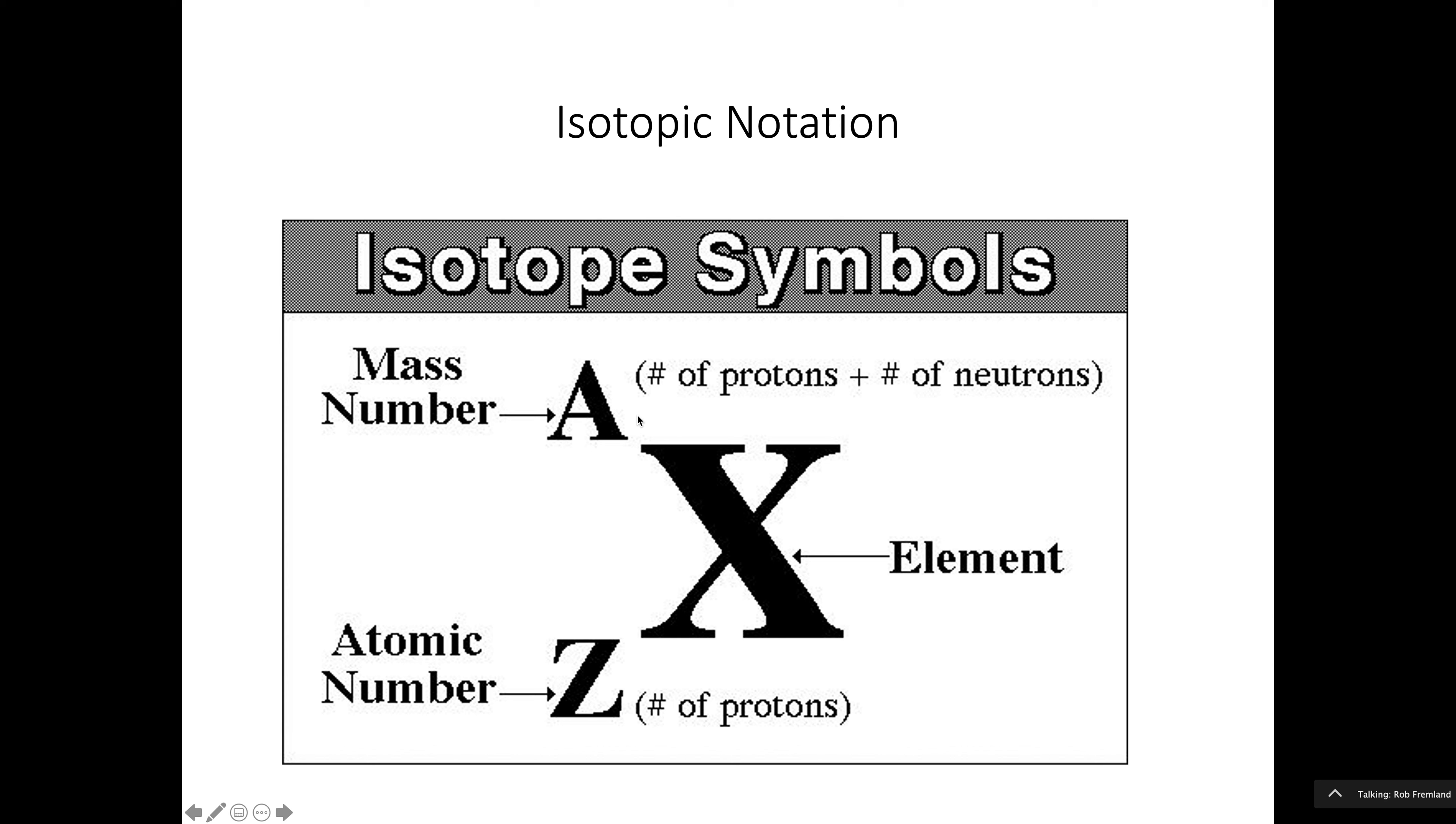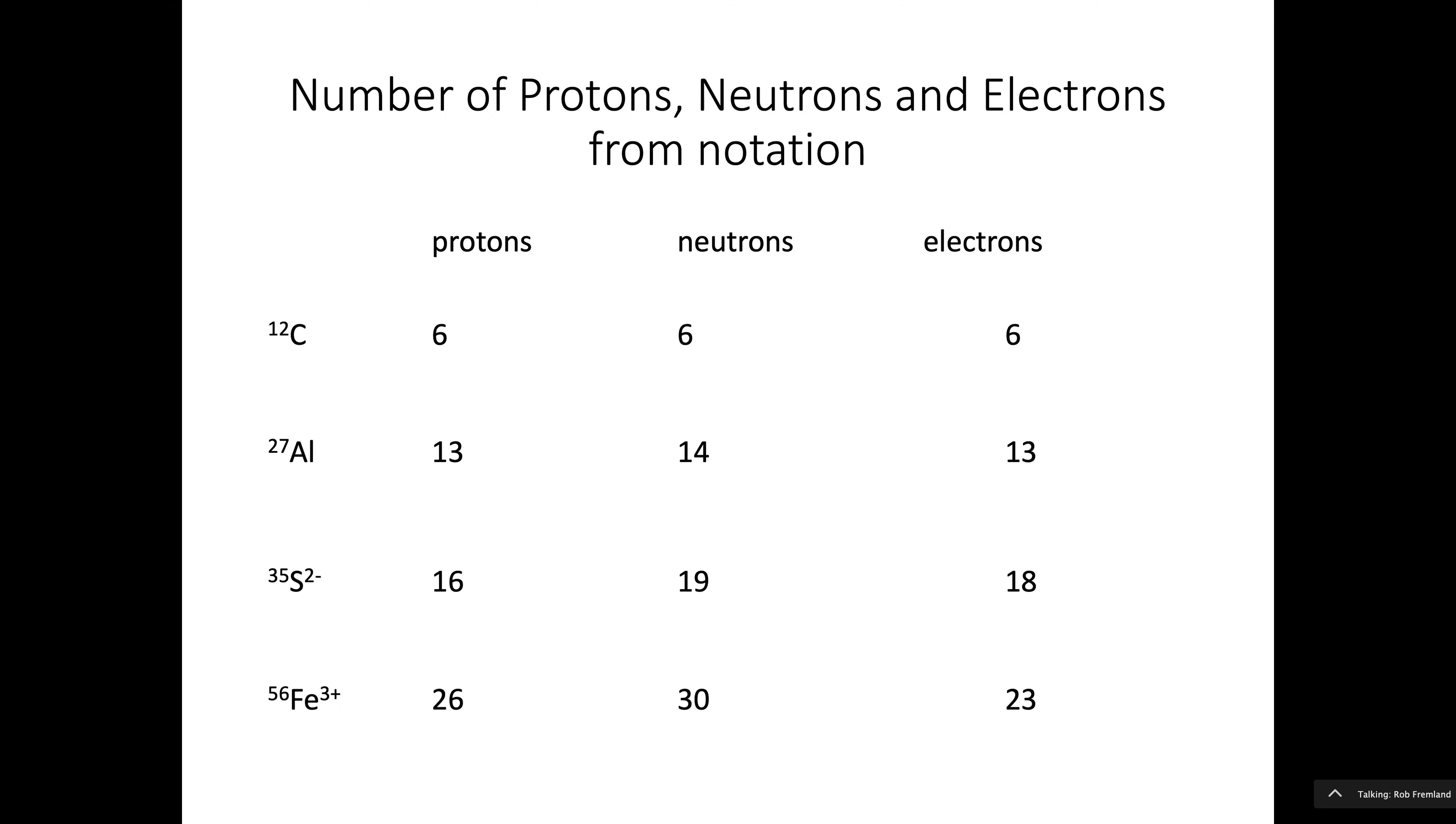This number is called the mass number. If you remember, only protons and neutrons have appreciable mass. So the mass number is going to be the sum of the protons and the neutrons. So from that, we can fill in this. With this type of notation, we can look at carbon. And this is where it would be very handy to have a periodic table. But if you look at the periodic table, carbon is number six. That means it has six protons. Aluminum is number 13. It has 13 protons. Sulfur is number 16. Iron is number 26. So the atomic number is the number of protons.